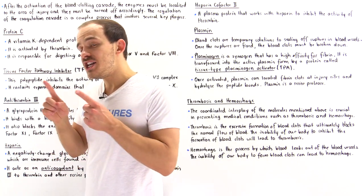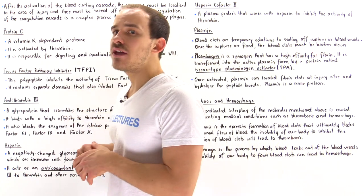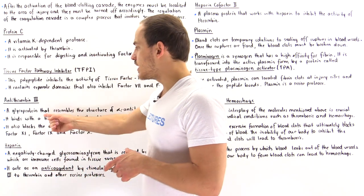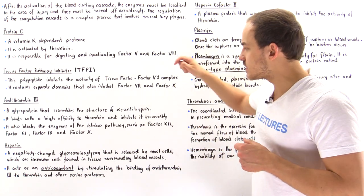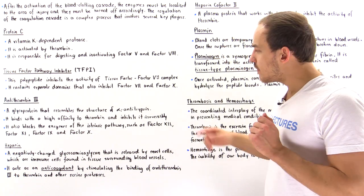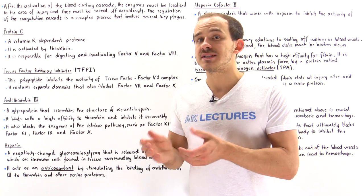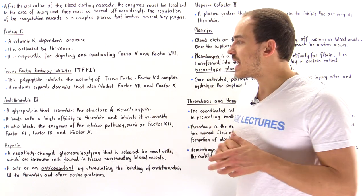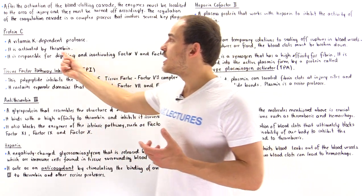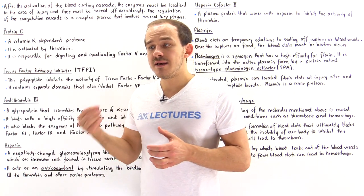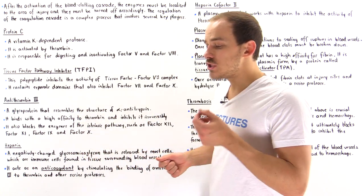Another important molecule acts as an irreversible inhibitor to thrombin: anti-thrombin III. Anti-thrombin III is a glycoprotein whose structure actually resembles that of alpha-1-antitrypsin — the irreversible inhibitor that inhibits elastase and trypsin. In the same way, anti-thrombin III binds to the active site and inhibits the activity of thrombin. By inhibiting thrombin, we inhibit the final common pathway and the formation of blood clots.